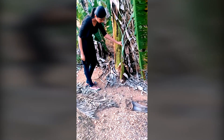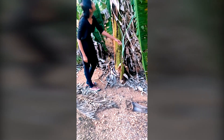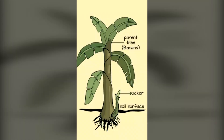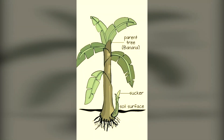Have you ever seen those small shoots arising out of the soil near the big banana plants? If yes, it's because a banana plant has its stem both above and below the ground, and new plants grow from the part of the stem that's below the ground. That's why a banana plant has a modified stem and it's modified for propagation.